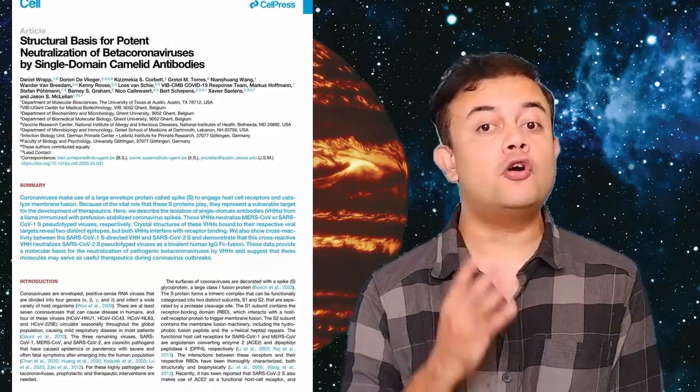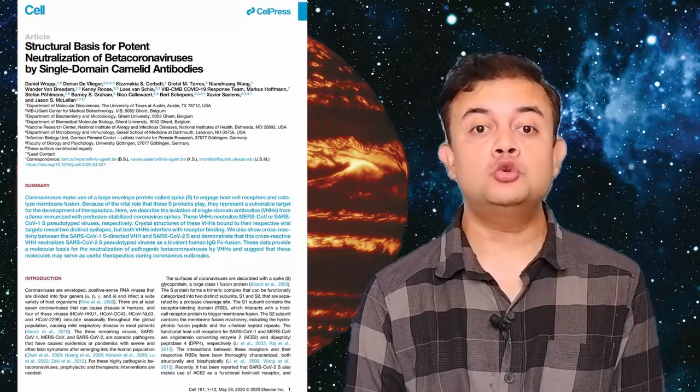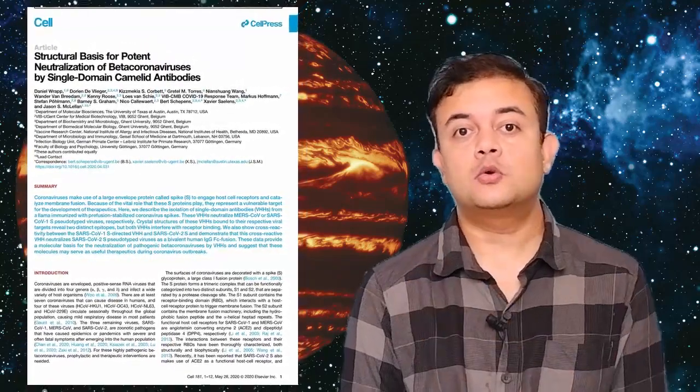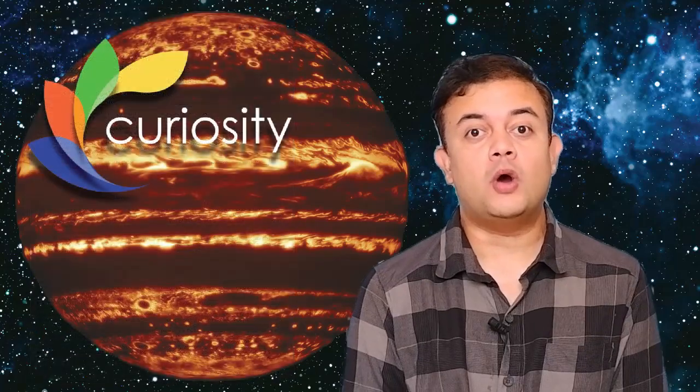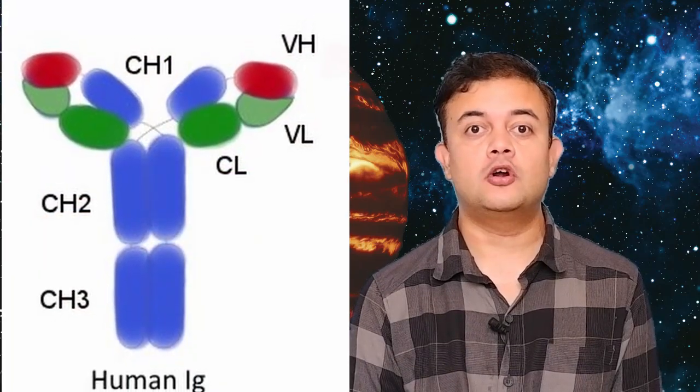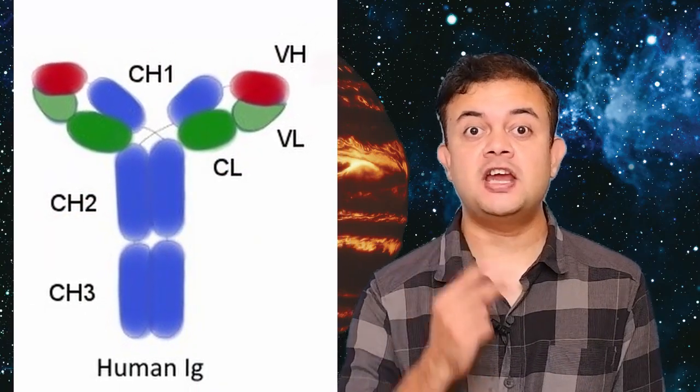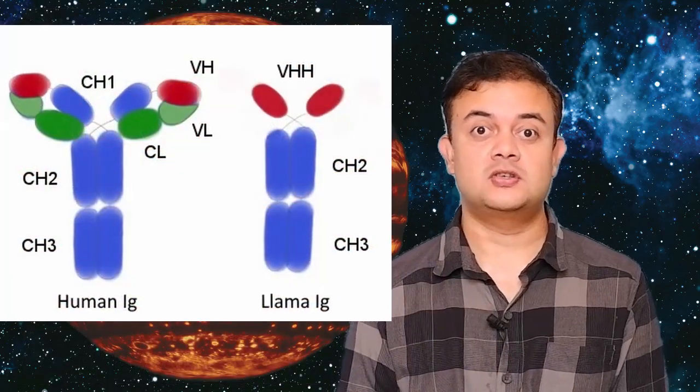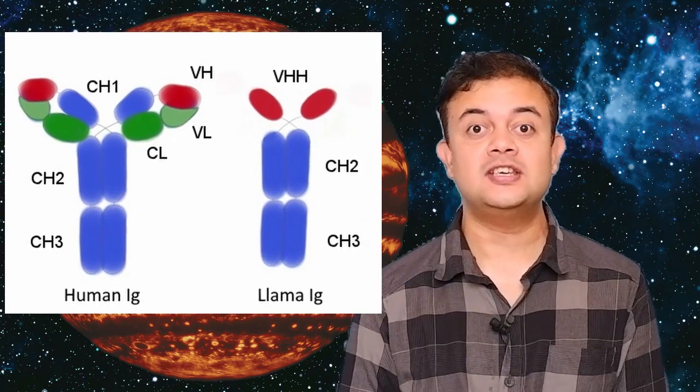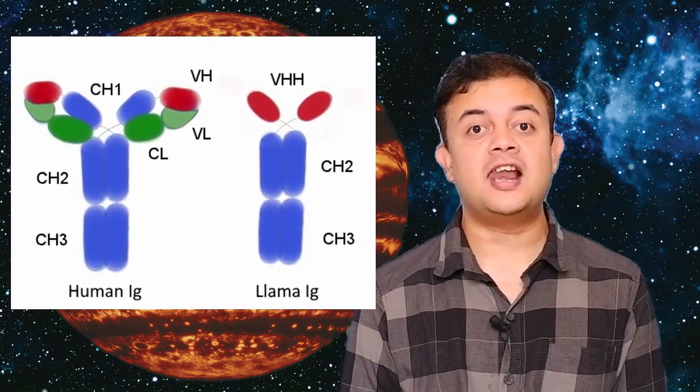When I read the story, the question arose: why llamas and not any other animal? We human beings produce only one type of antibody called immunoglobulin, the Y-shaped protein. On the other hand, llamas produce two antibodies - one exactly like human beings and another that is way too small in size, just 25% the size of human immunoglobulin.